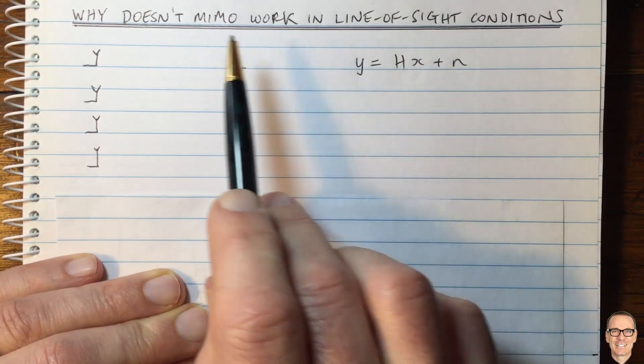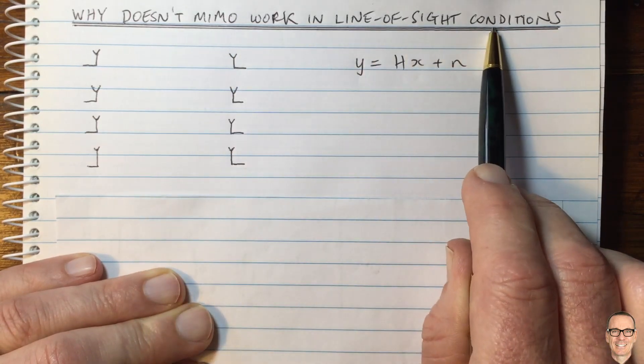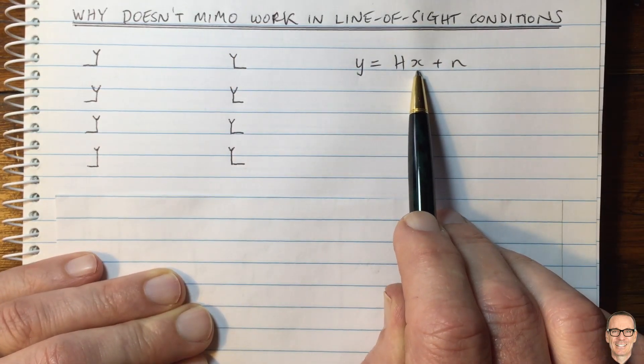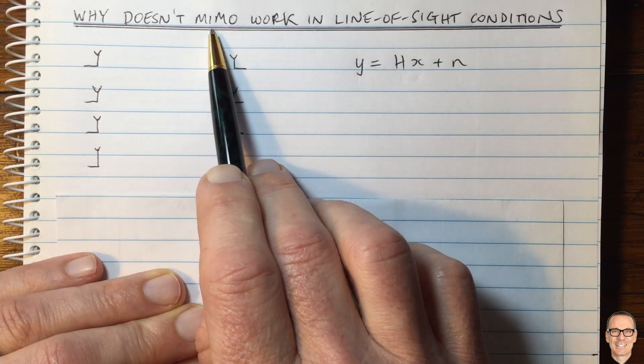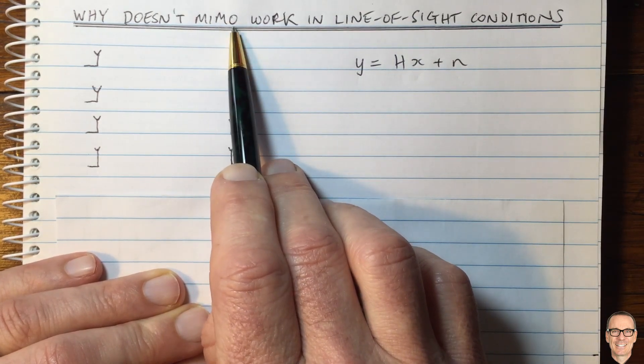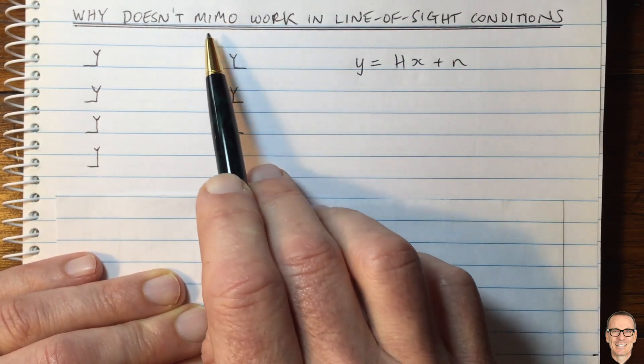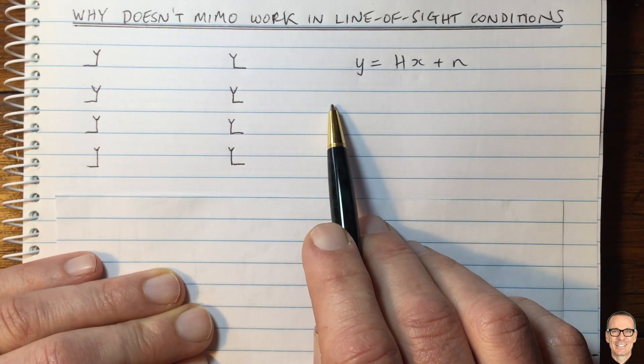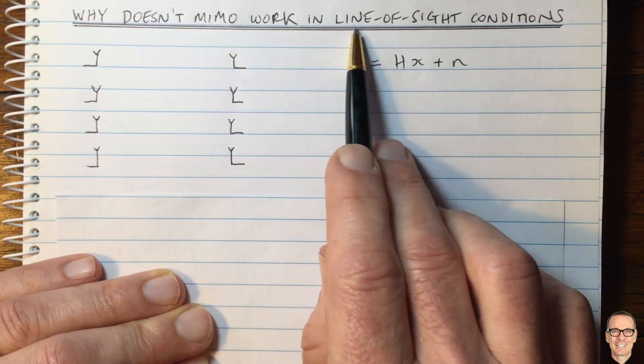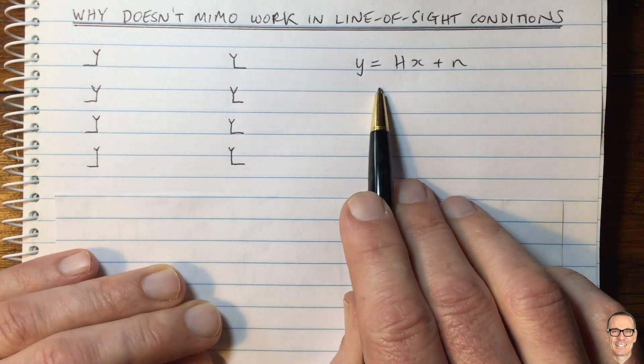The first thing to realize is that this question arises when we're talking about spatial multiplexing in MIMO. There are other types of MIMO, such as beamforming, and you can find information about those in the description below. But this question comes up when we're talking about spatial multiplexing.